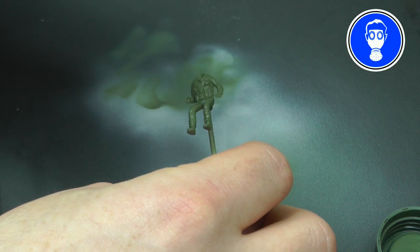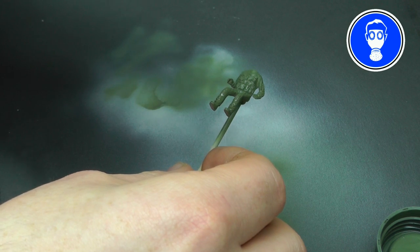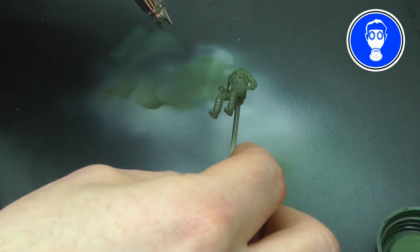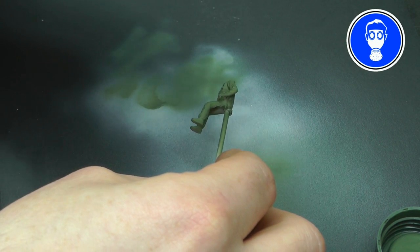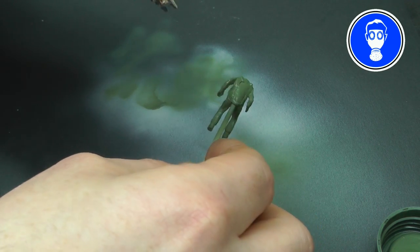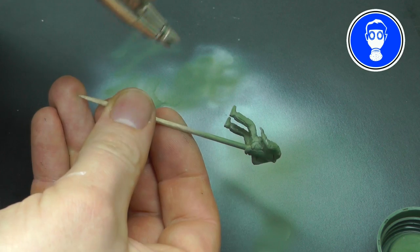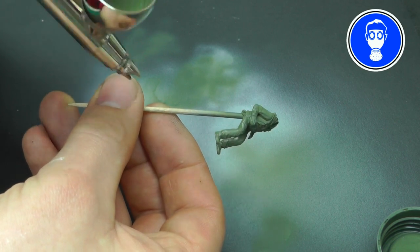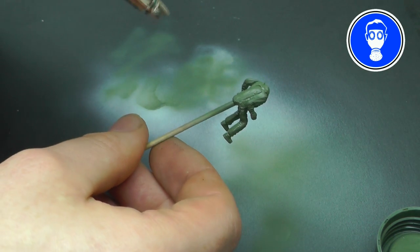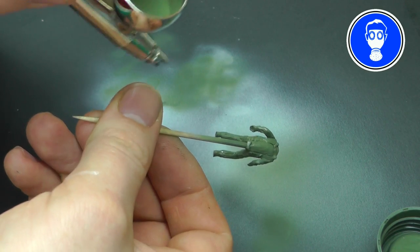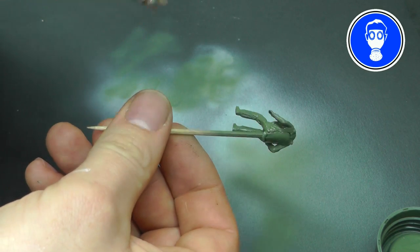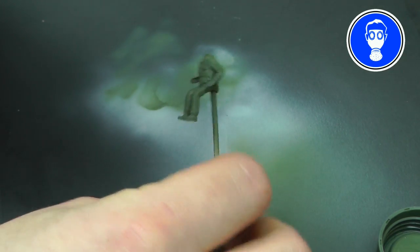Now also remember when spraying, it's like extractor fans on, windows on, face masks on, all those kind of things. And with this, you want to make sure you get into all the nooks and crannies, under his arms, all these kind of places, just to make sure we get even coverage all over.